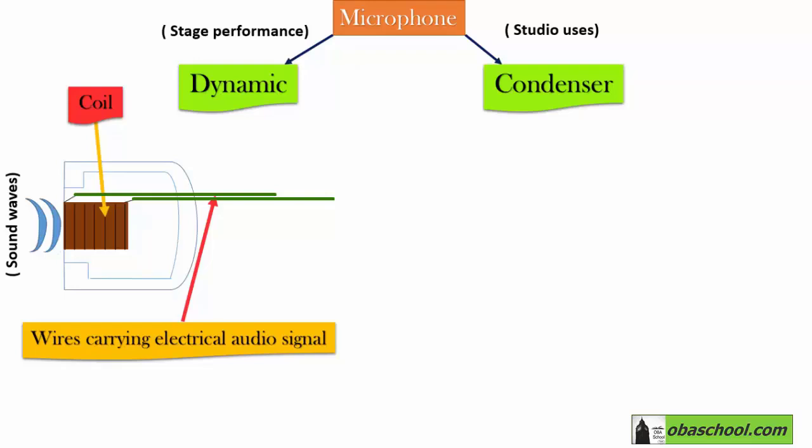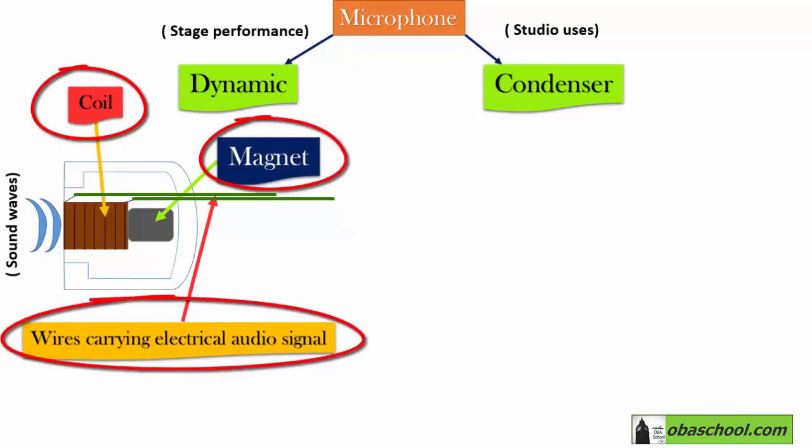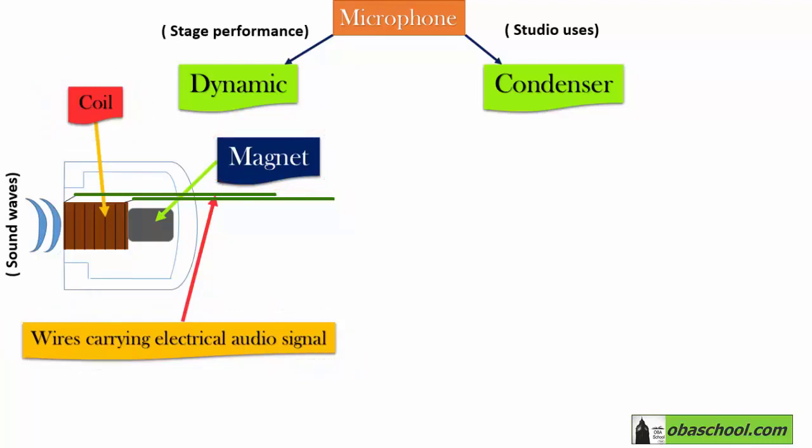Also inside the dynamic microphone there is a magnet, as you can see here in this figure. That means the coil, magnet, and the wires all work together to take these sound waves and transform them to a loud and clear sound that could be heard.